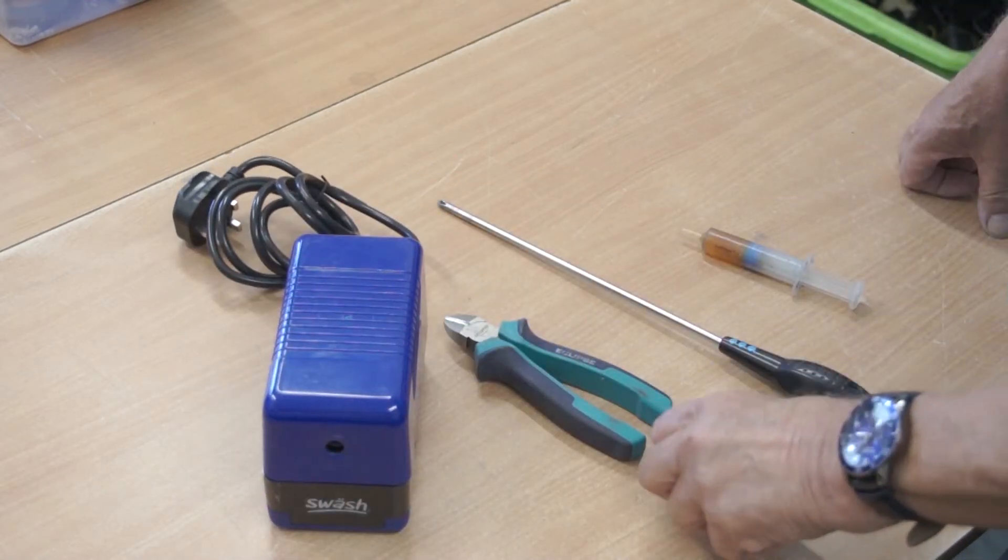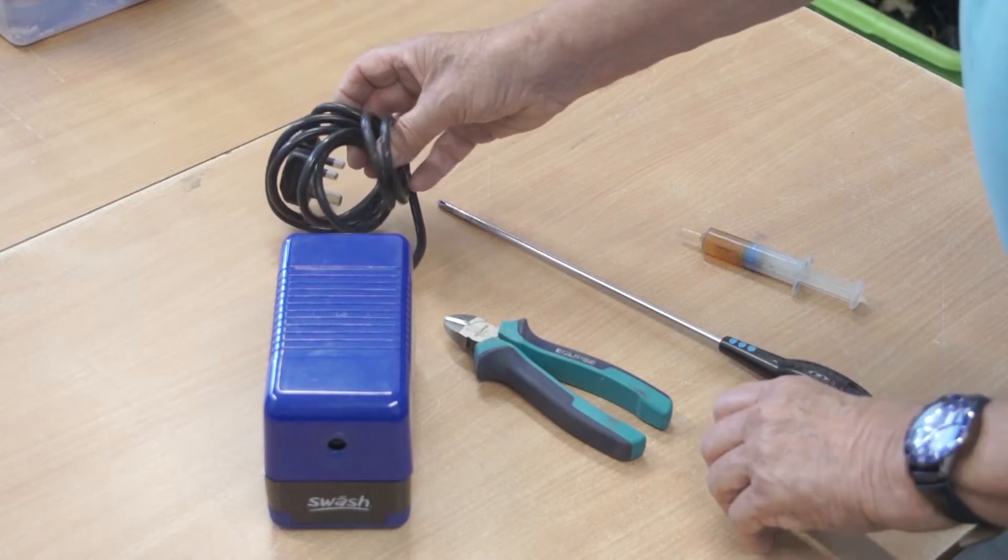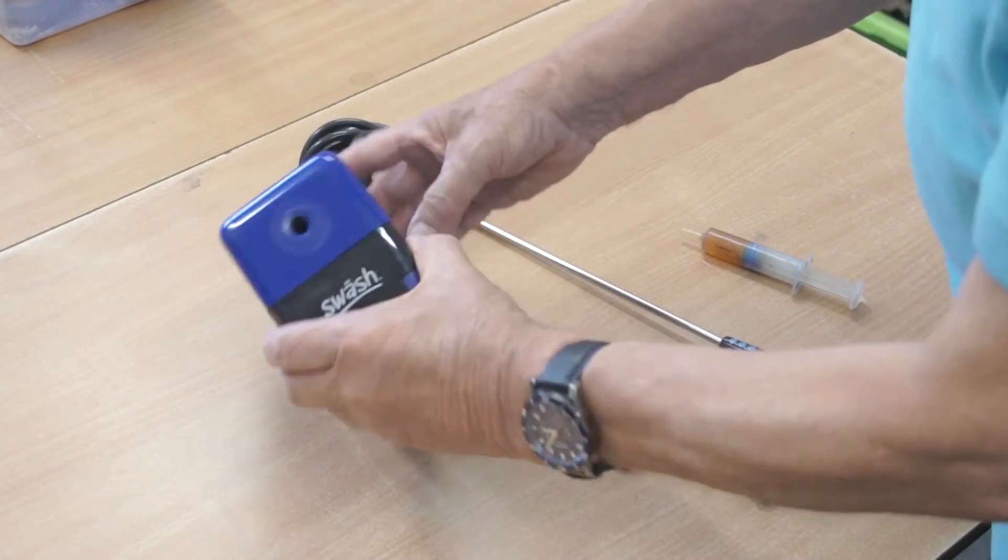We're going to change the cutting blade in the electric pencil sharpener, the EDS-800 that we supply.